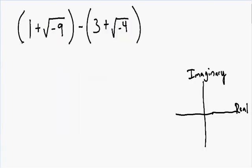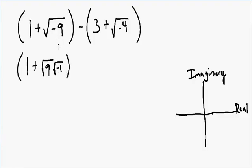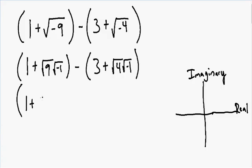Let's go over one more example. We have 1 plus the square root of negative 9, minus 3 plus the square root of negative 4. It's not possible to have a negative inside your square root — this is what we call an imaginary number. I'm going to rewrite these negative square roots using the imaginary letter i. The square root of negative 9 becomes the square root of positive 9 times the square root of negative 1. The square root of 9 is 3, and the square root of negative 1 is i.